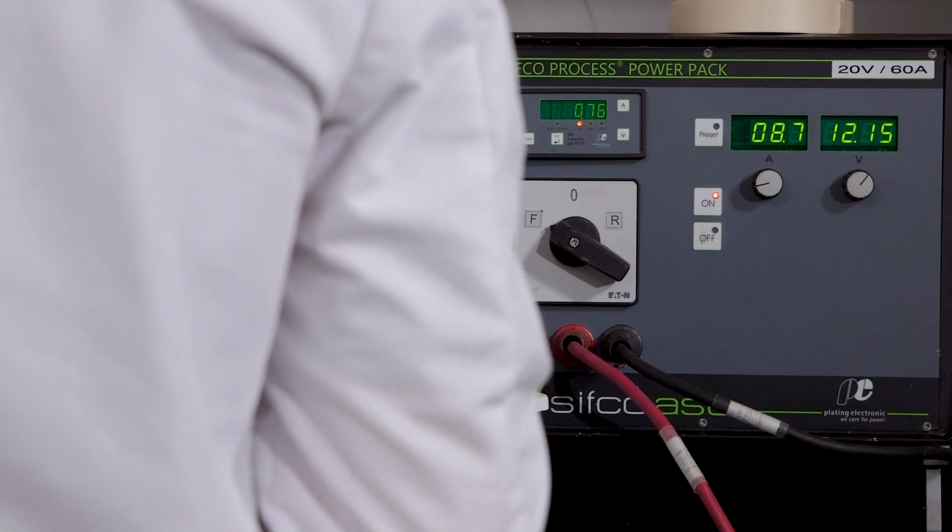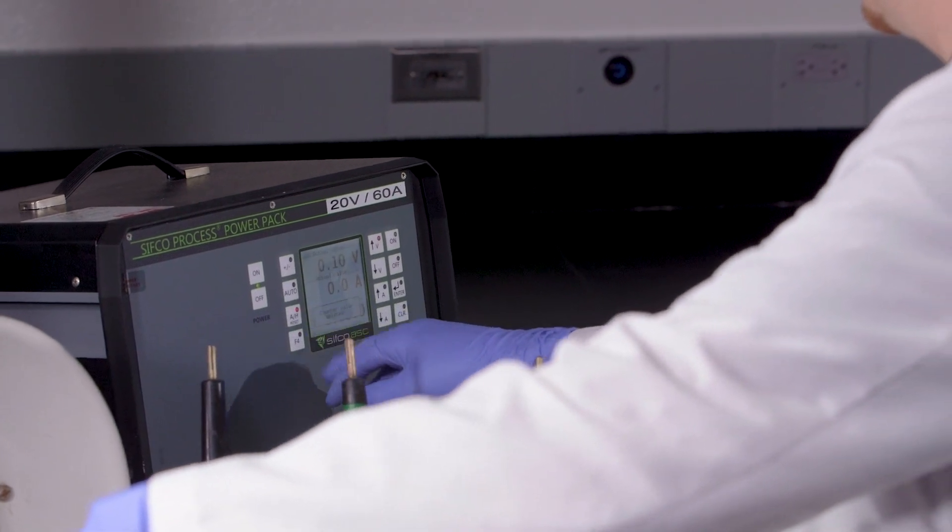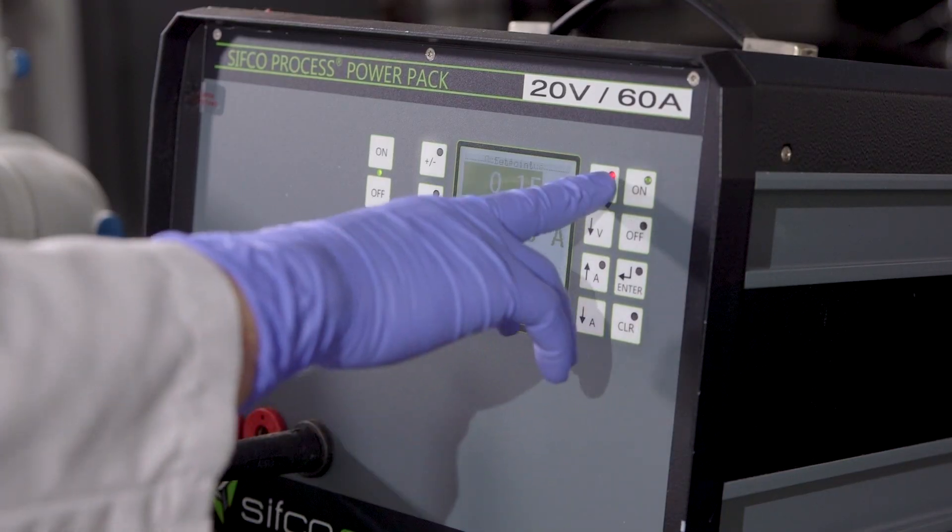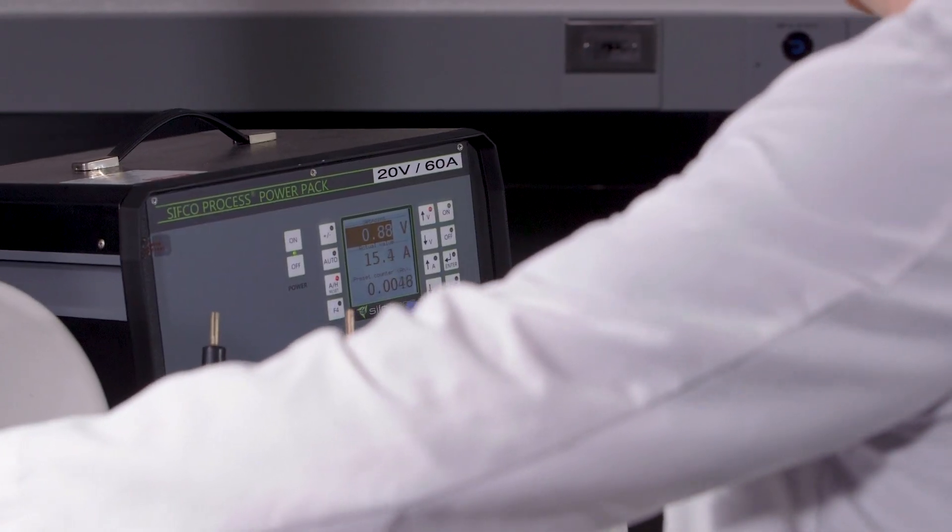A brush plating power pack gives the operator, or HMI, the ability to control and monitor the polarity, voltage, amperage, and amp hours for a given job for each of the steps involved in the process.